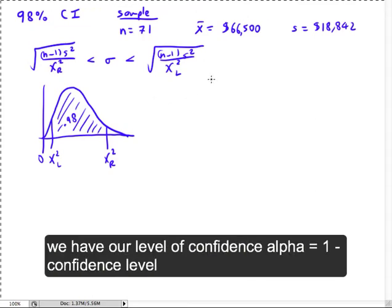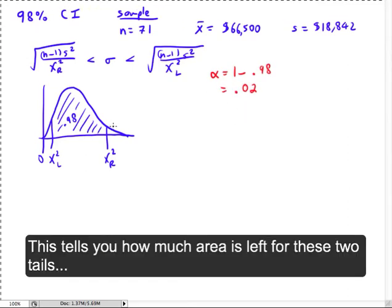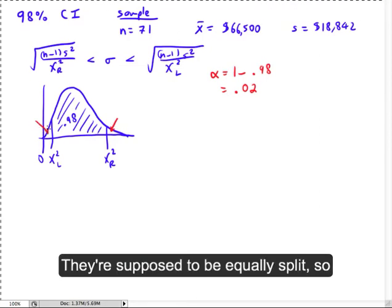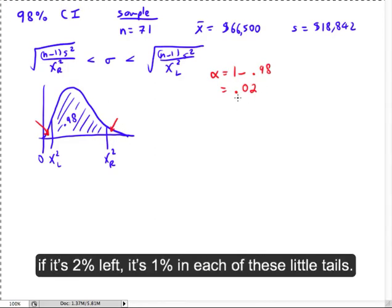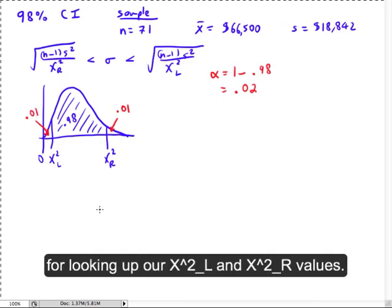Now, when you do that, we have our level of confidence. Alpha, which is one minus the confidence level, is one minus 0.98, which is 0.02. And what that really tells you is how much area is left for these two little tails. They're supposed to be equally split. So if it's 2% that's left, it's going to be 1% in each of these little tails. Now, that's going to be key for looking up our chi-squared left and right values.